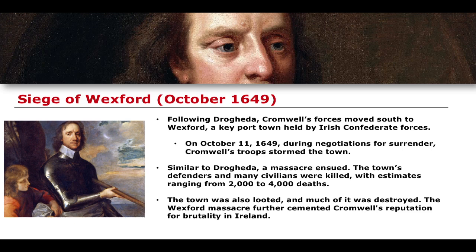Following Drogheda, in October of 1649, we also see the Siege of Wexford — a port town held by Irish Confederate forces slightly further south. During the negotiations for surrender, the town was stormed by Cromwell's forces on the 11th of October 1649. Similar to the previous siege, a massacre took place with defenders and civilians being killed, as well as looting and destruction of the town. This war in Ireland was relatively successful in negotiating a surrender from both the Irish Confederates and remaining Royalist forces.